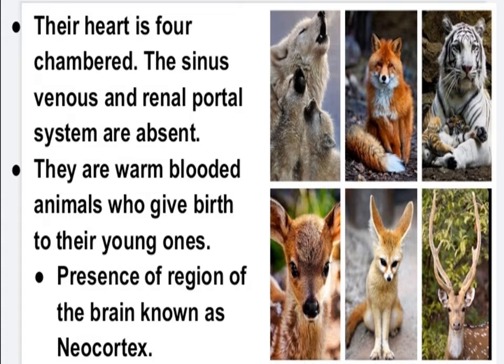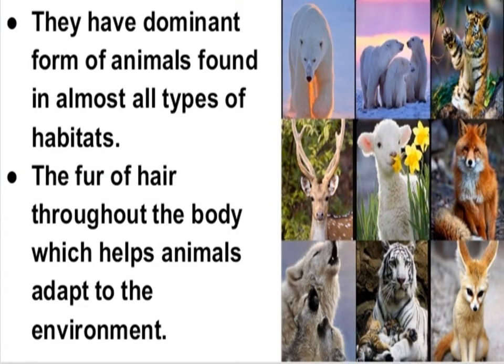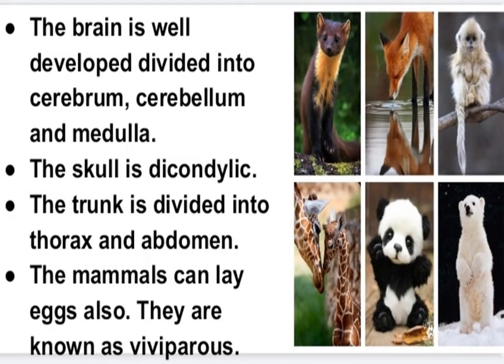The sinus venosus and renal portal system are absent. They are warm-blooded animals that give birth to their young ones. There is presence of a region of the brain known as the neocortex. They are a dominant form of animal found in almost all types of habitats. The fur or hair throughout the body helps animals adapt to the environment. The brain is well developed, divided into the cerebrum, cerebellum, and medulla.